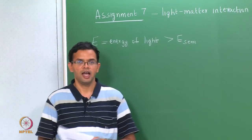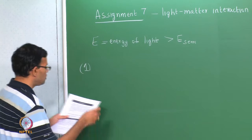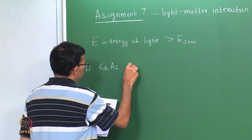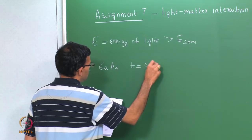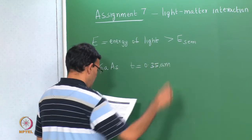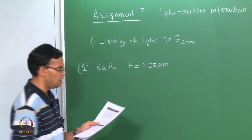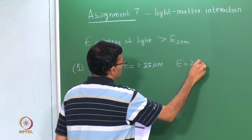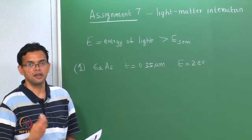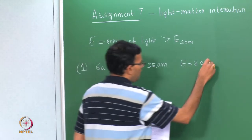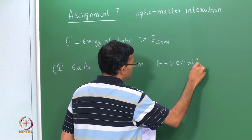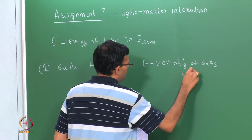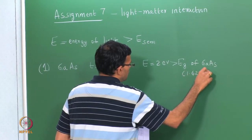Problem 1. We have a sample of gallium arsenide which is 0.35 micrometers thick. It is illuminated with a light source and the energy E is 2 electron volts, which is greater than the band gap of gallium arsenide, E_g of gallium arsenide being 1.42 electron volts.